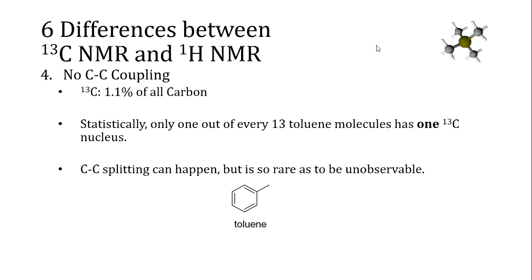A fourth difference is that there's no carbon-carbon coupling in a carbon NMR spectrum. Remember that carbon-13 represents only 1.1% of all carbon atoms, so statistically not every molecule has a carbon-13 nucleus. For toluene, which has seven carbon atoms, only 1 in 13 toluene molecules has one carbon-13 nucleus. The likelihood of having two carbon-13 nuclei in the same molecule is 1 in 169. Even if two carbon-13 nuclei happen to be neighboring each other, the statistical likelihood is so rare that it can't be picked up by most instruments and is not observable.